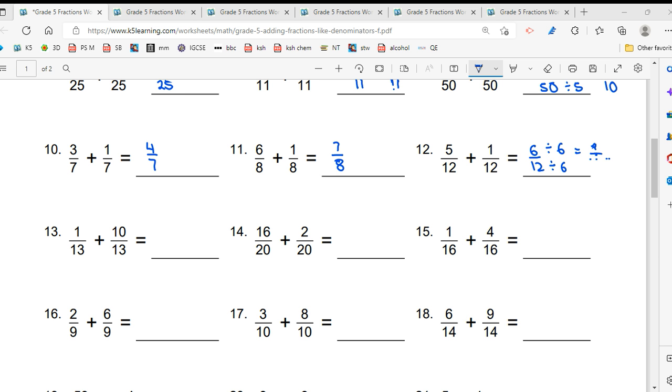Rukko mujhe jara na, Yhe whatsapp ban karne do, Whatsapp ke karan aise ho raha hai. So 1 upon, Aapka 2 ho gya. 1 upon 30, Very good.